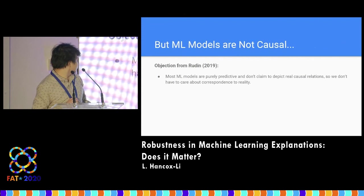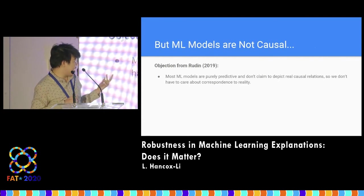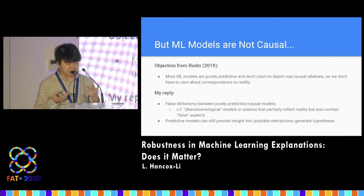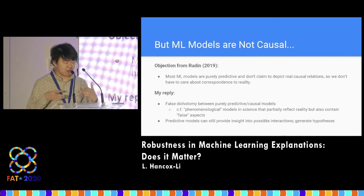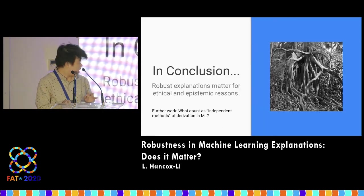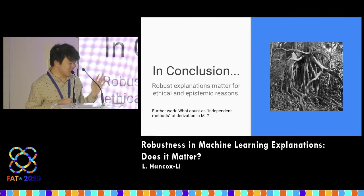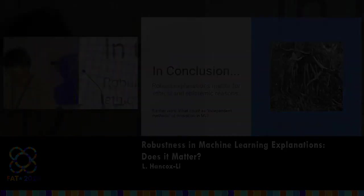There's an objection that we shouldn't care about reality because machine learning models are not causal anyway. I don't think this works, because even if machine learning models are not exact representations of causality, we still want them to have some relation to reality, and there's no sharp distinction between predictive-only models and causal models. In conclusion, we should care about robust explanations because they matter for both ethical and epistemic reasons.